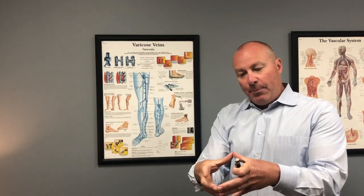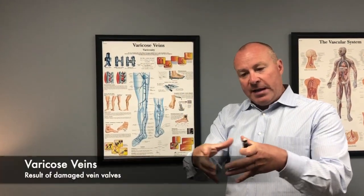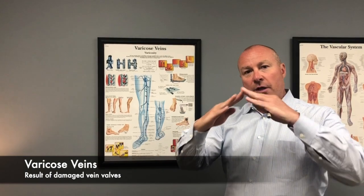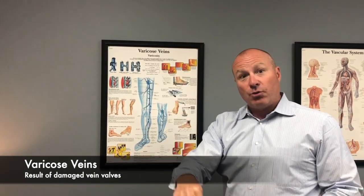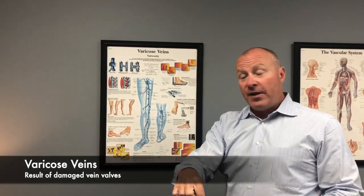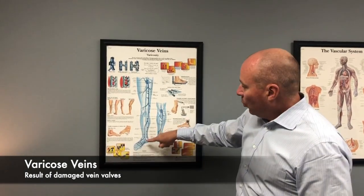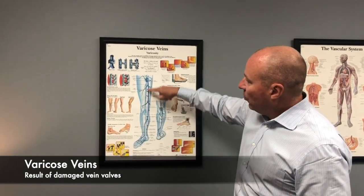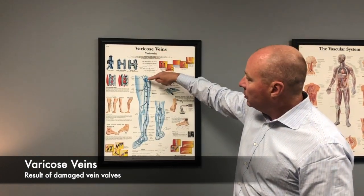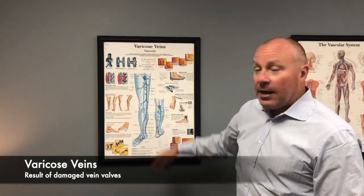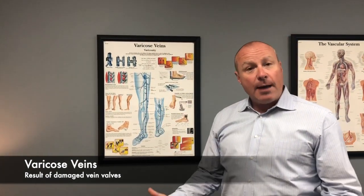What can happen is when veins stretch out, the valves come apart and blood goes the wrong way down the veins. So rather than blood going up the leg back to the heart and lungs, blood goes the wrong way down the veins.